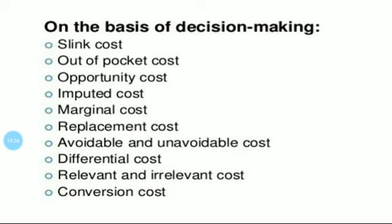Seventh, avoidable and unavoidable cost. Avoidable cost is a cost that is not incurred if the activity is not performed — that is, if there is no production, there is no cost. On the other hand, unavoidable cost is the cost that is still incurred even if the activity is not performed in the organization. Example: fixed cost.